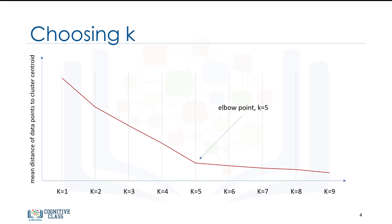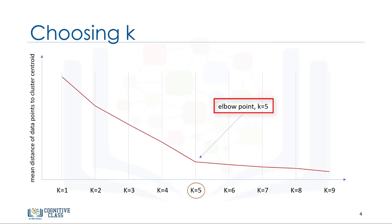So, the value of the metric as a function of k is plotted and the elbow point is determined where the rate of decrease sharply shifts. It is the right k for clustering. This method is called the elbow method.